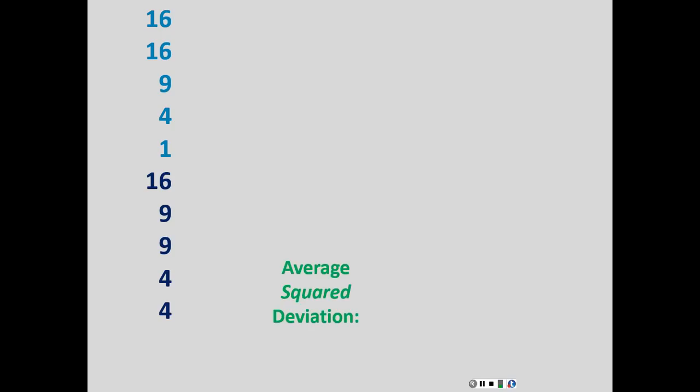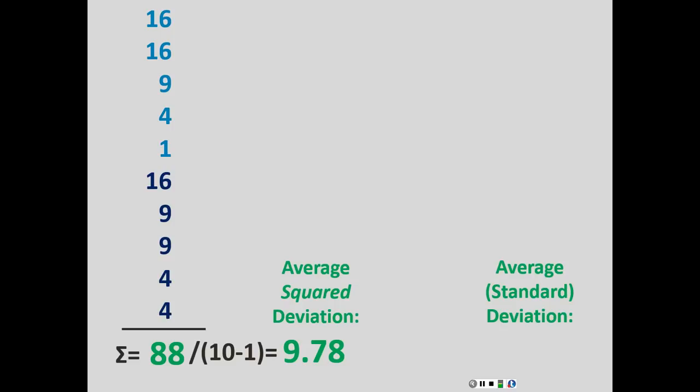You take the mean of all the squared deviations. For reasons I'll explain later, you don't divide by 10 — there were 10 observations — if we're treating this as a sample, we divide by one less, n minus 1. This is related to degrees of freedom. For samples divide by n minus 1; for populations divide by n. The average squared deviation comes out to 9.78.